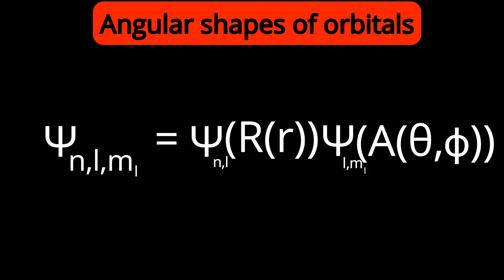Our attempt here is to explain the electron wave. That electron wave is represented by one function called the wave function psi. In order to solve and understand the wave function, we use one mathematical equation — the Schrödinger equation. The Schrödinger equation gives us ideas about three quantum numbers: the shell number (principal quantum number), sub-shell number (azimuthal quantum number), and orbital (magnetic quantum number).